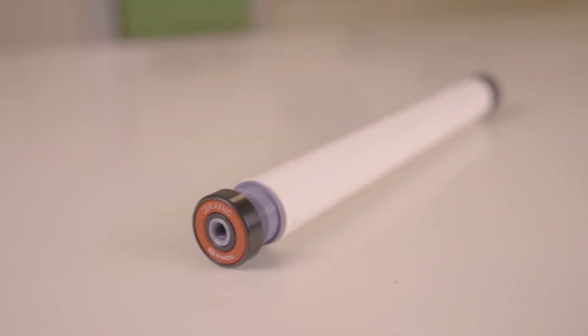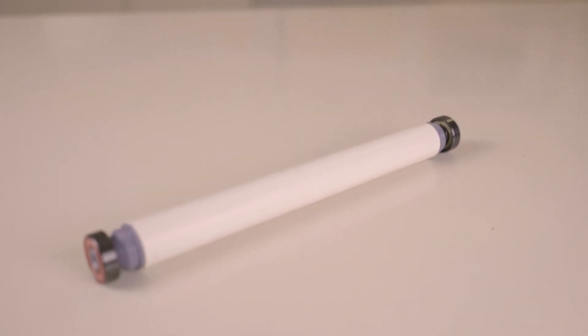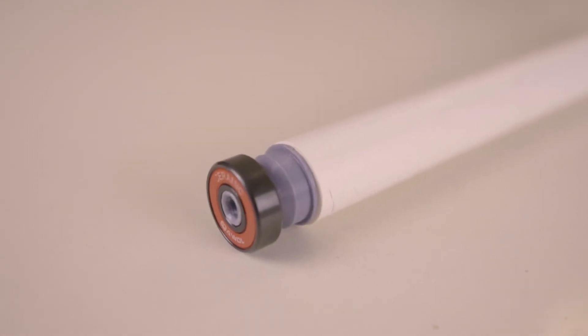I also made a spindle that has 608 skate bearings on the end, but to be honest this is overkill and the standard PVC tube is just as good for most uses.